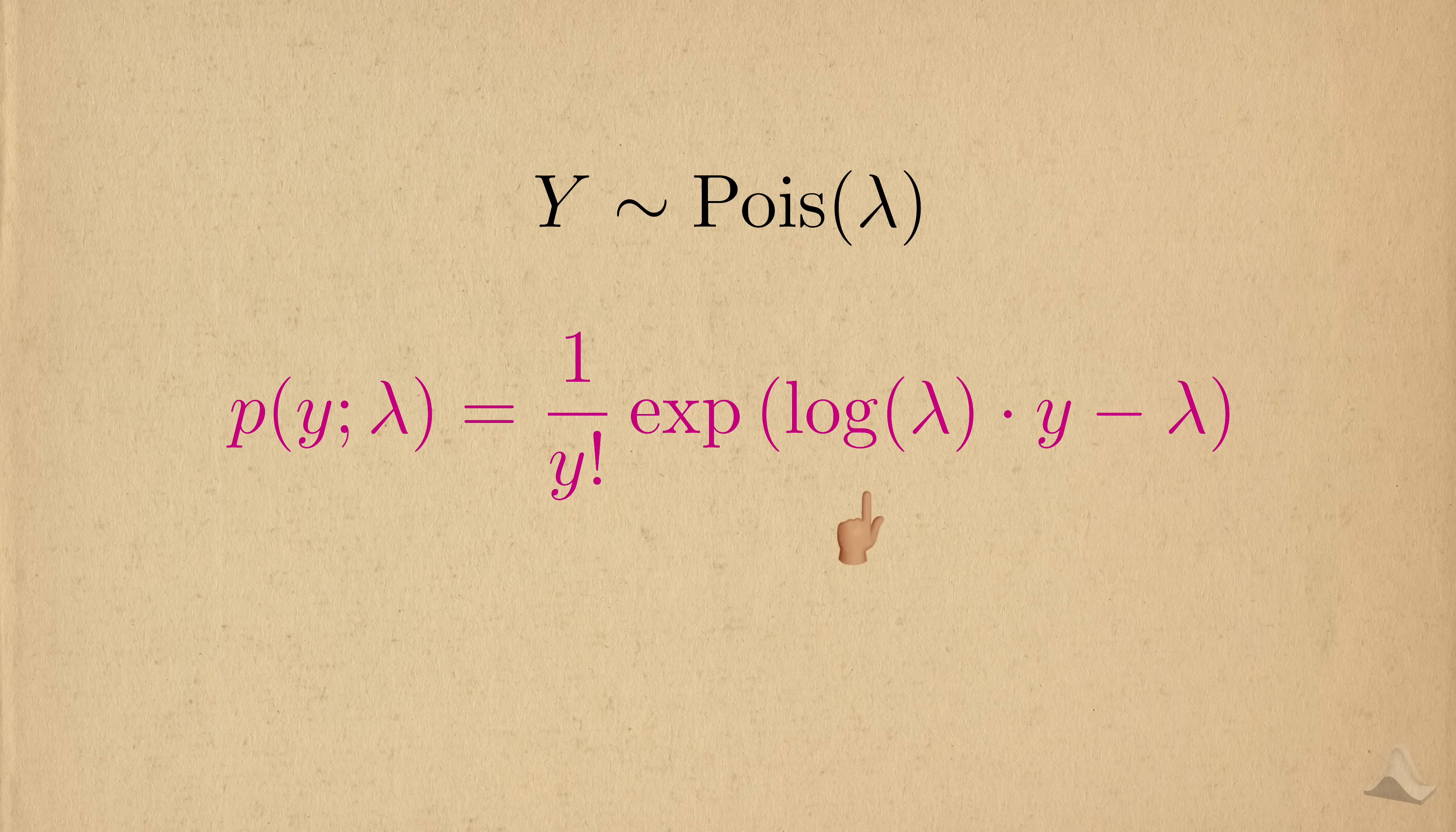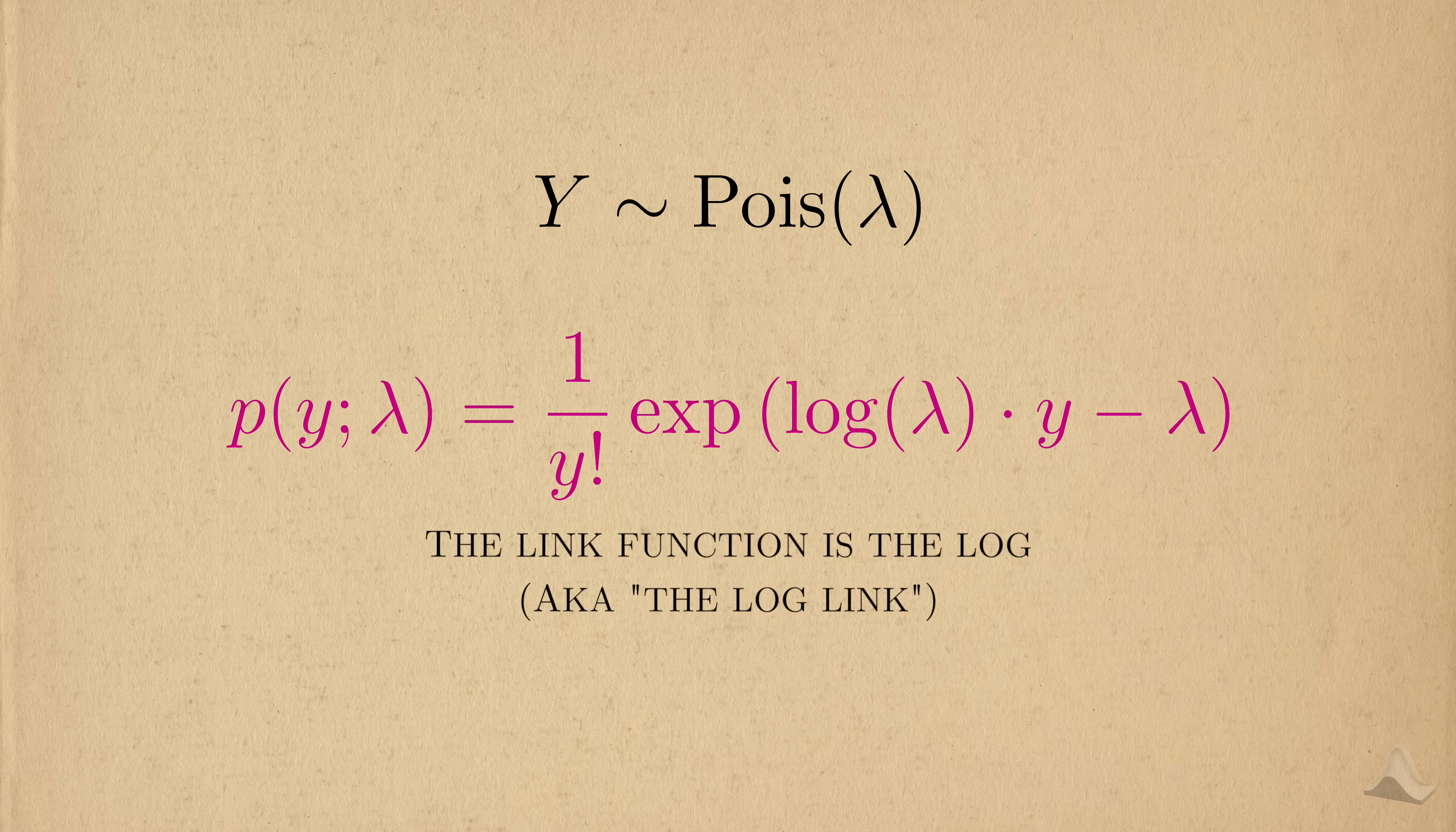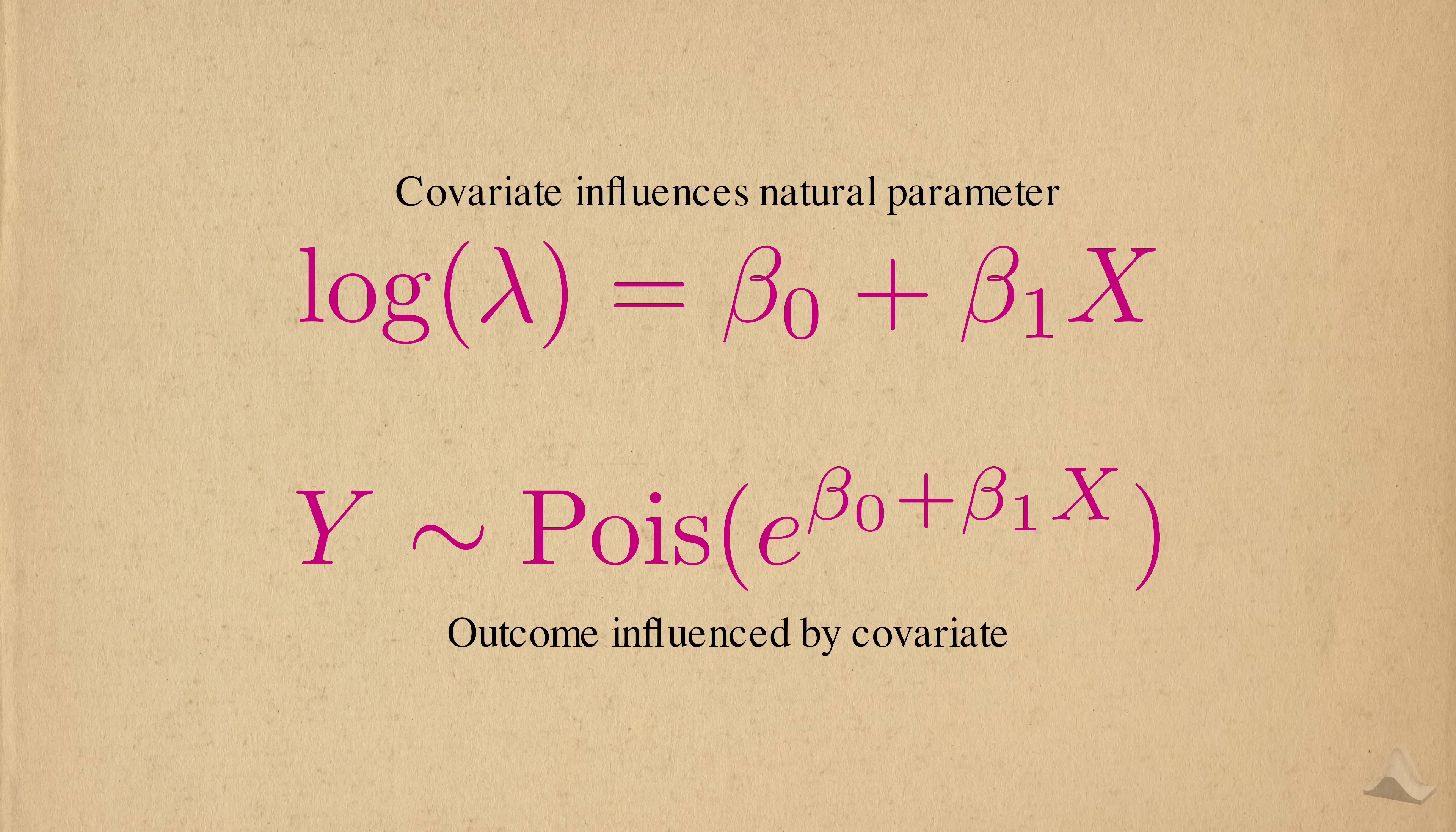It's up to the analyst to choose the timescale they want to work on. In its exponential family form, the Poisson distribution looks more like this. From this perspective, you can easily see the natural parameter of the Poisson distribution, the log of the rate, or log rate for short. You'd also say that the link function is the log link.